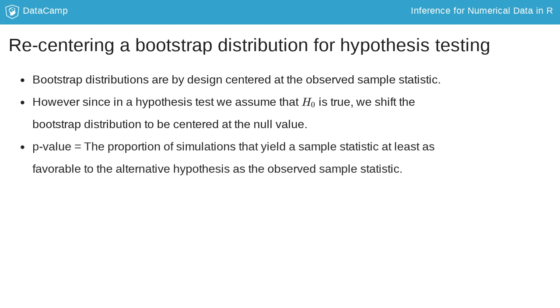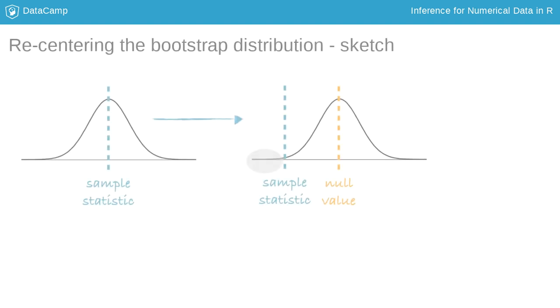The p-value is then defined as a proportion of simulations that yield a sample statistic at least as favorable to the alternative hypothesis as the observed sample statistic. Here is a graphical representation.